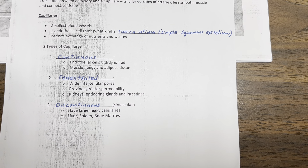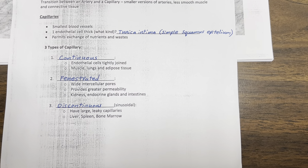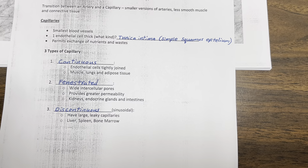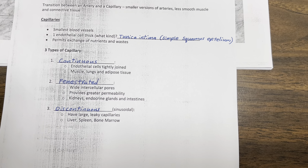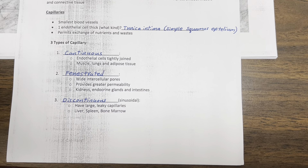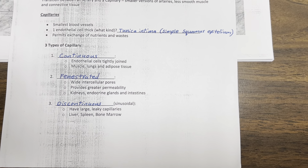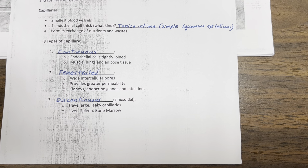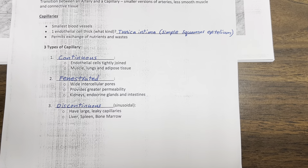There are three types of capillaries: continuous capillaries, fenestrated capillaries, and discontinuous capillaries. Continuous capillaries are found in the muscles, lungs, and adipose tissue. Fenestrated capillaries are found in the kidneys, endocrine glands, and intestines. Discontinuous capillaries are found in the liver, spleen, and bone marrow.